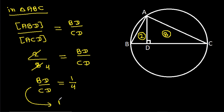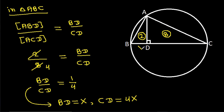That means if BD is X, then CD will be 4X.